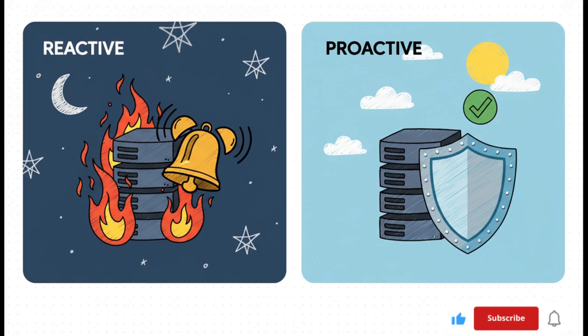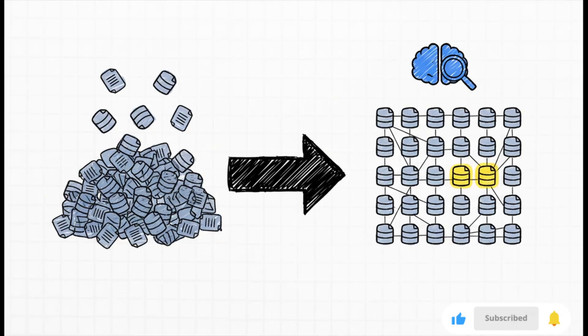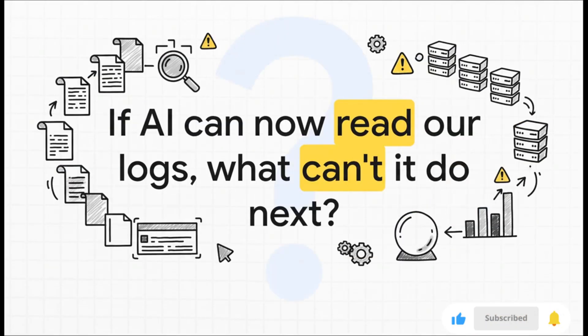This gives your team the breathing room to fix the root cause before it ever affects a single person. So if there's one thing to remember, it's this: we have more data than ever before, but just collecting it isn't the answer. By applying smart machine learning, we can finally start to understand the complex story that our logs are trying to tell us all along. We can find those hidden patterns, and yeah, we can actually start to predict the future of our own systems.